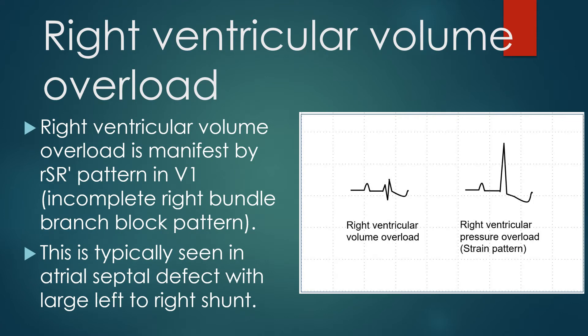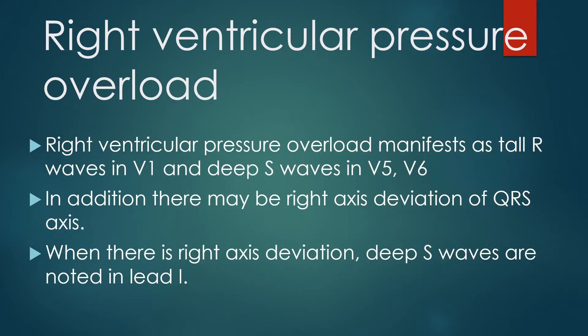Right ventricular volume overload manifests as RSR-prime pattern, i.e., incomplete right bundle branch block pattern in V1, typically seen in atrial septal defect with large left-to-right shunt. Right ventricular pressure overload manifests as tall R waves in V1 and deep S waves in V5 and V6. In addition, there may be right axis deviation of QRS. When there is right axis deviation, deep S waves are noted in lead 1.